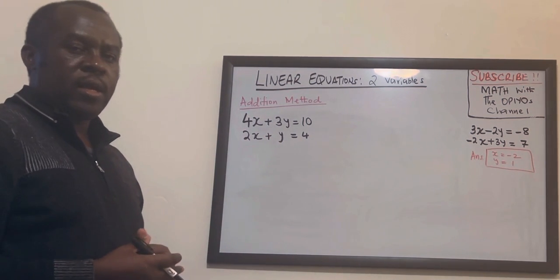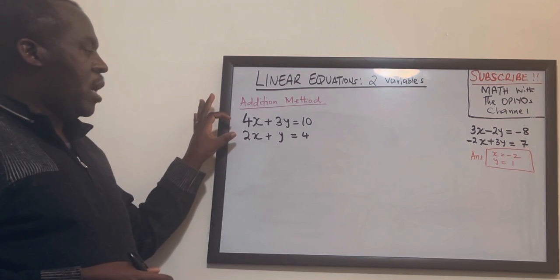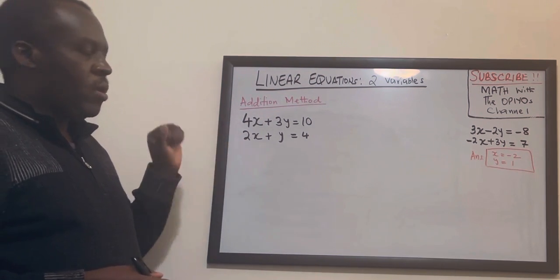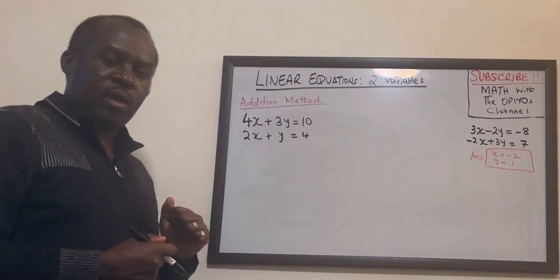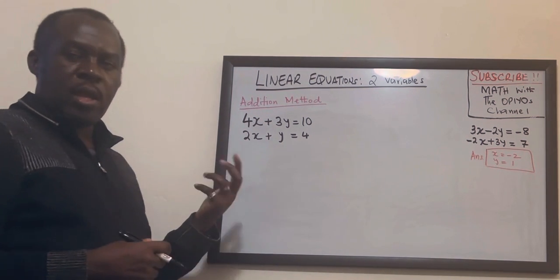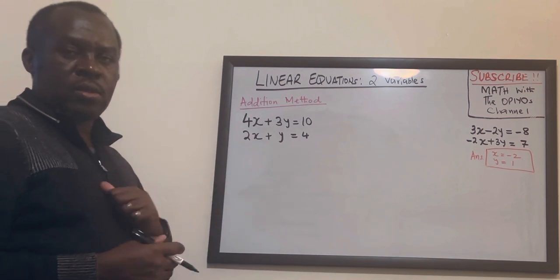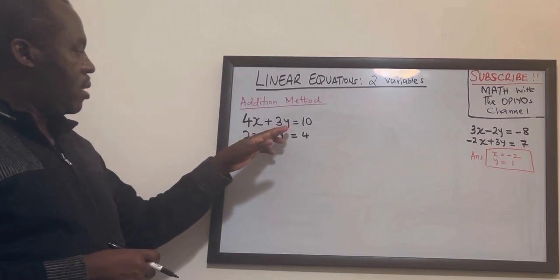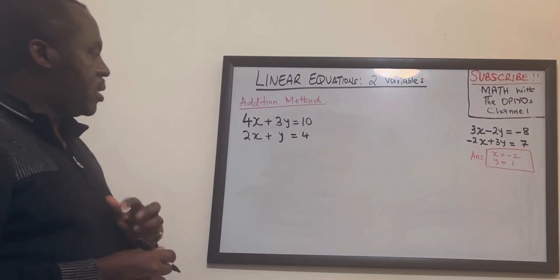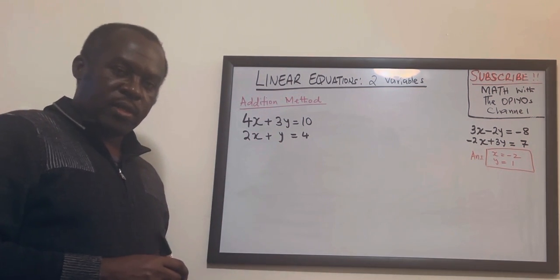So the whole idea here is to see how you can eliminate one of the variables and then find the value of that variable and substitute that in one of the equations to get the second variable. So you look at x and y in both equations and see which one might be easier to eliminate first.